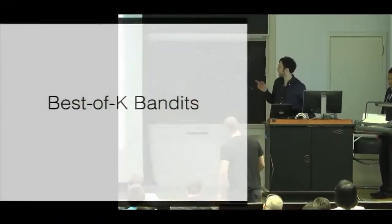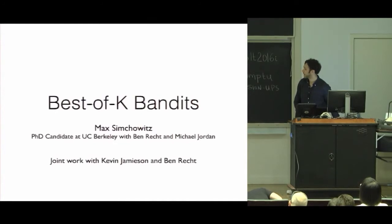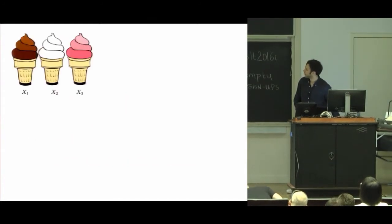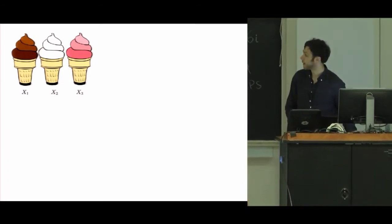So here K is going to be different than the number of arms that we use. Hi, I'm Max. I'm giving a talk called Best of K Bandits. In this talk, N is going to refer to the number of simple arms, and K is going to refer to a subset of arms that we're going to try to find.